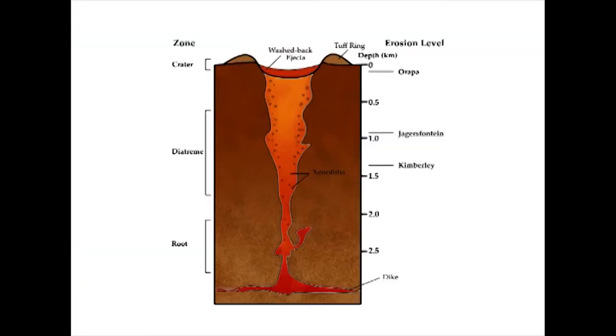Diamonds differ from the rest of the gem minerals in that they were formed somewhere in the region between the lower part of the earth's crust and the beginning of the mantle. The manner in which gemstones were created in nature can be related to the sedimentary, igneous or metamorphic processes of rock formation as well as the chemical content of molten and aqueous residues.